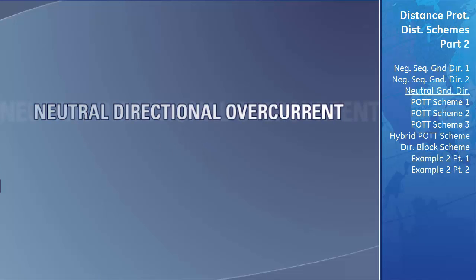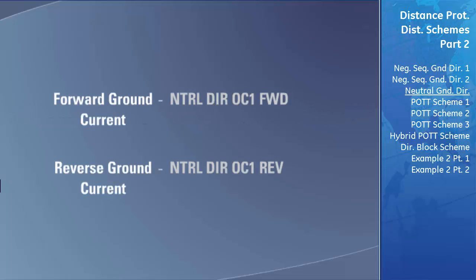The neutral directional overcurrent element is the other D60 element that can detect the direction of ground current flow, and also has two separate independent functions: one for detecting current flowing in the forward direction and one for detecting current flowing in the reverse direction. When forward ground current is detected, it turns on the neutral directional overcurrent forward flag. When reverse ground current is detected, it turns on the neutral directional overcurrent reverse flag. When one flag is on, the other will be off.